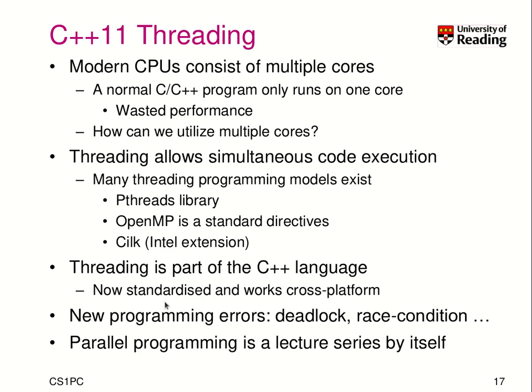The problem with threading is that when you have concurrency in your code, you introduce new programming errors. A deadlock occurs when multiple threads wait for input from each other but none can make progress. Race conditions occur when the result of the program depends on the execution speed of one thread compared to others. There's more to these programming errors, but parallel programming is a lecture series by itself.